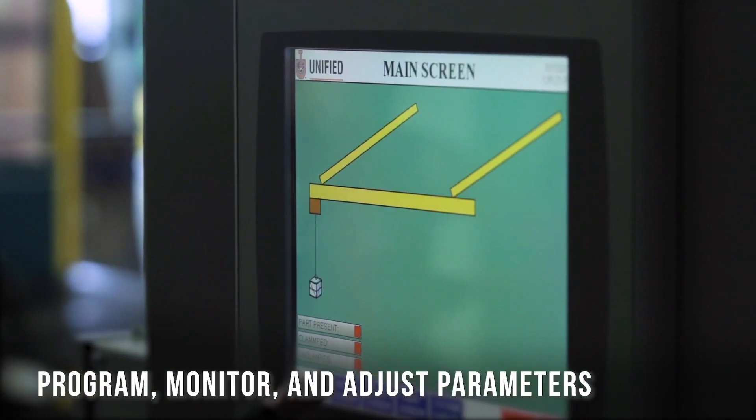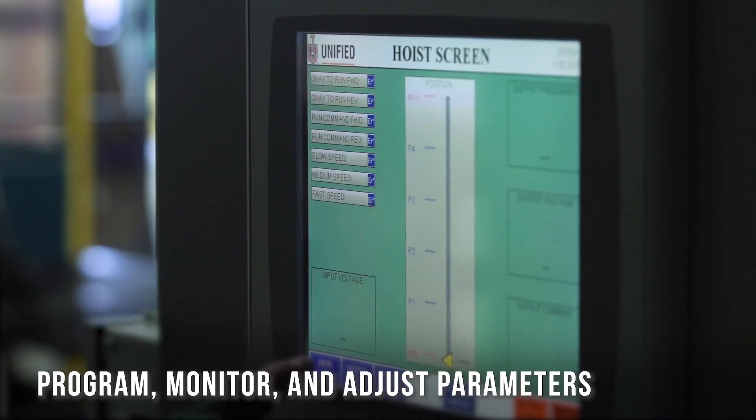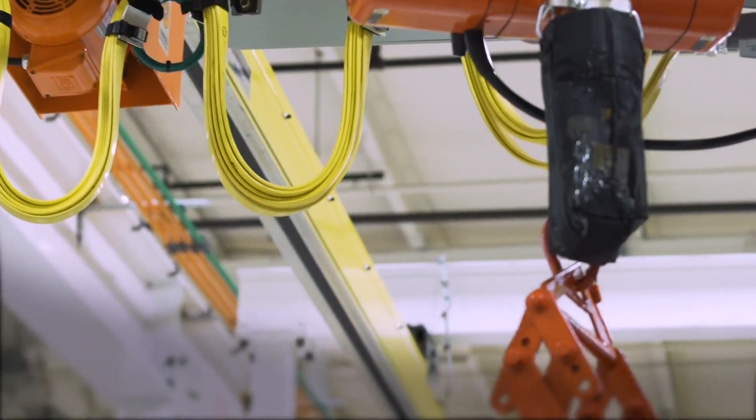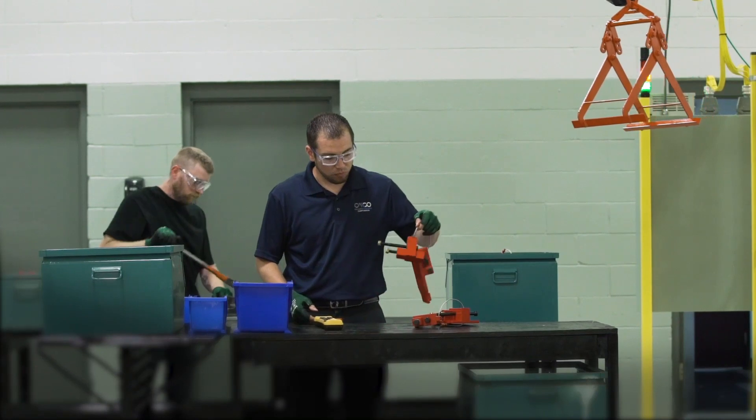Parameters such as hook height, load status and speed can be programmed, monitored and adjusted as necessary. After the task at a work cell is complete, an operator may send the crane and its load to the next position or a different operator.